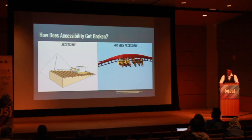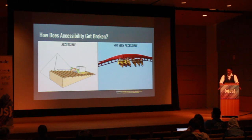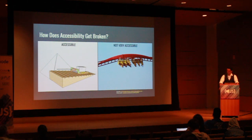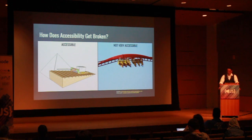Marketers, designers, and developers can get distracted by making sites fun, dynamic, and cutting edge. Often we're not even aware how our choices make the content of our site harder to perceive, understand, and interact with. Accessibility is broken by people who make something without thinking about the abilities of their users or the context in which their users will be using the things that they make.